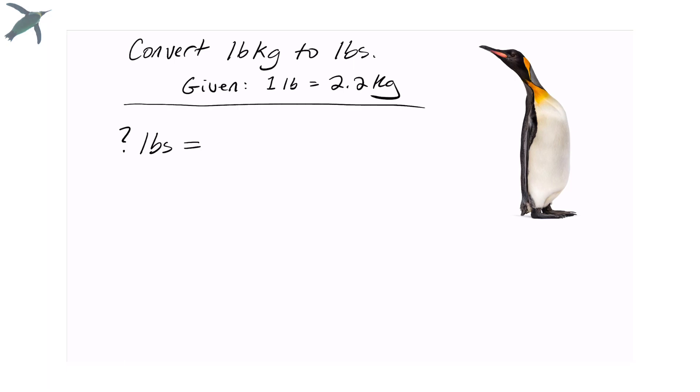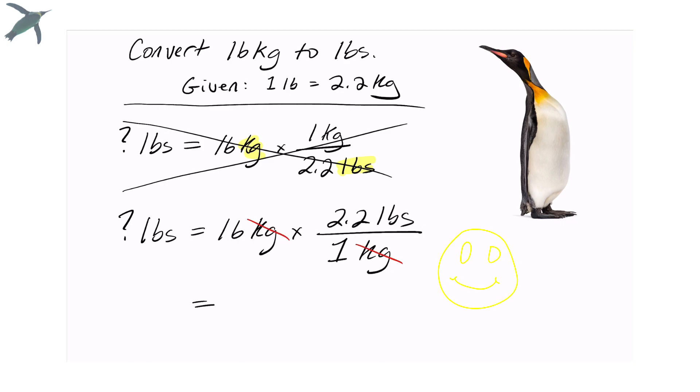Start with a question mark. How many pounds is 16 kilograms? Now I can do one kilogram over 2.2 pounds, but my units are not going to cancel. So that's not going to work. I'm going to have to use it the other way. 2.2 pounds over one kilogram. Now my units cancel and I get my answer in pounds.